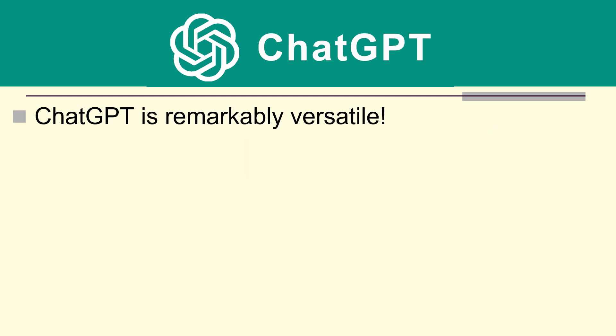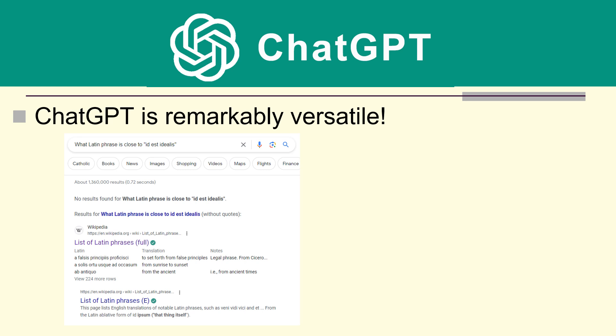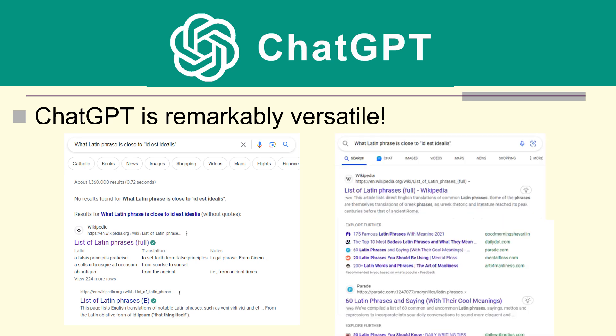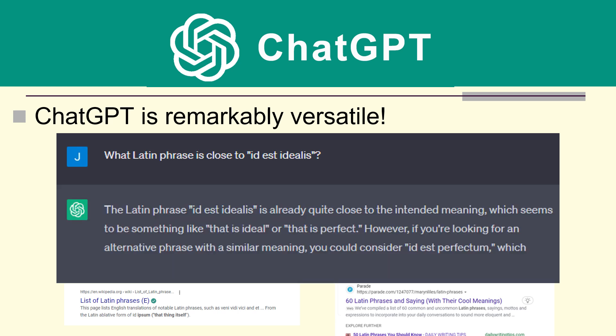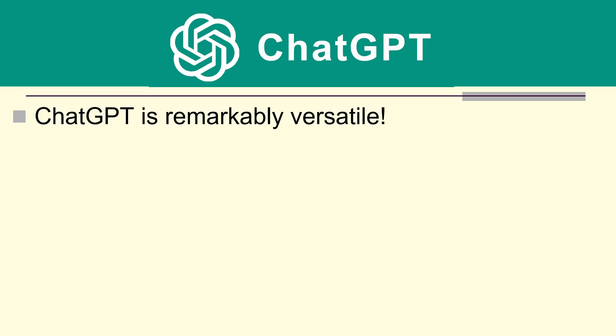Now this GPT architecture is used to implement a chatbot. So ChatGPT is remarkably versatile. For example, suppose we wanted to know what exactly does 'id est idealis' mean. We could do a Google search and that's not helpful. We could do another search engine - that's not really helpful. Or we could ask ChatGPT, and it responds: 'The Latin phrase id est idealis is already quite close to the intended meaning, which seems to be something like that is ideal or that is perfect. However, if you're looking for an alternative phrase with a similar meaning, you could consider id est perfectum, which translates to that is perfect.' That's really versatile, but it's not very good at math.